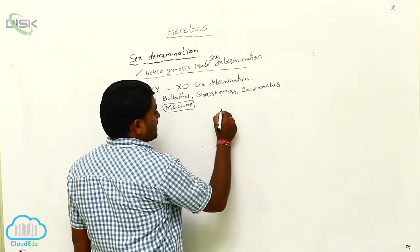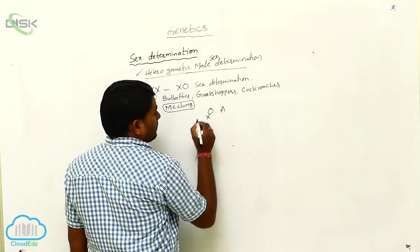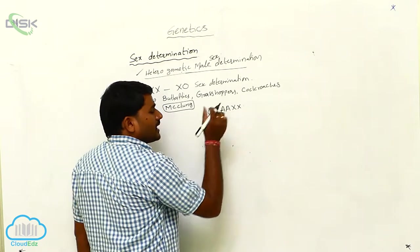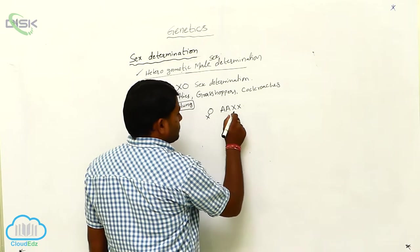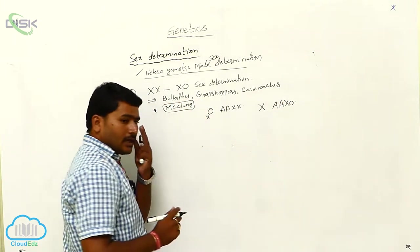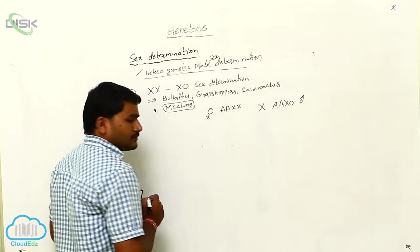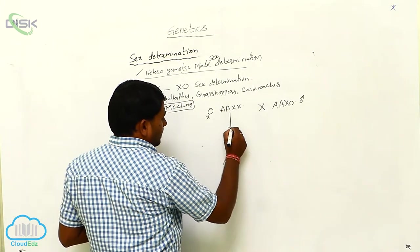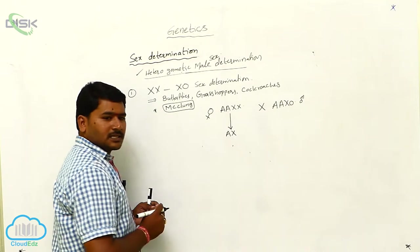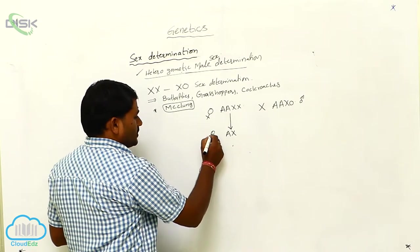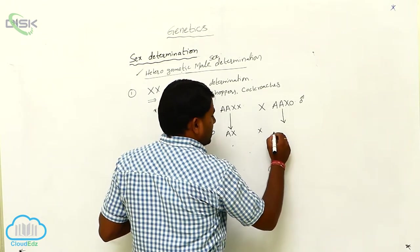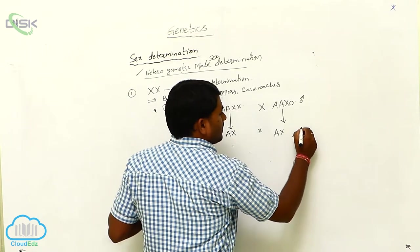In XX/X0 sex determination, the female karyotype is AAXX — where A refers to autosomes and XX refers to sex chromosomes. The male karyotype is AAX0. The female produces only AX type ova — all similar. The male produces two types of gametes: AX and A0. If AX ova combine with AX sperms, the result is AAXX, which is female. If AX ova combine with A0 sperms, the result is AAX0, which is male.